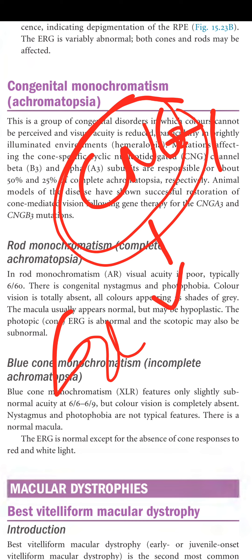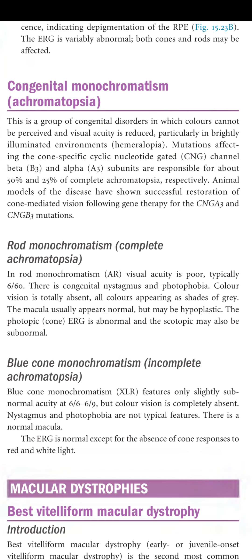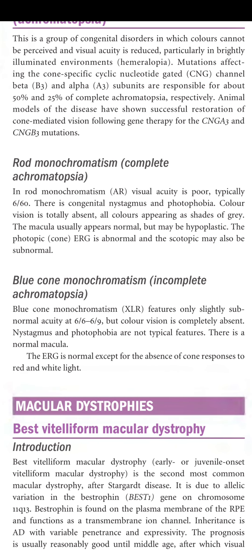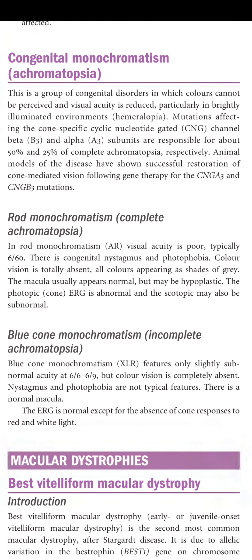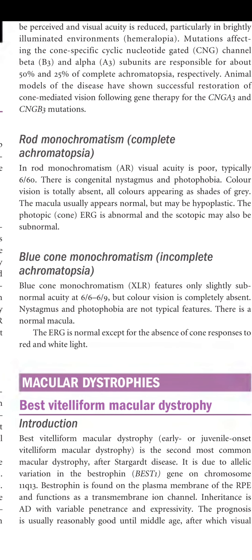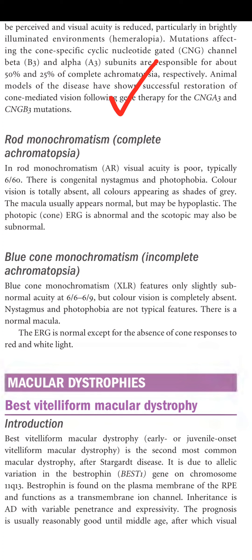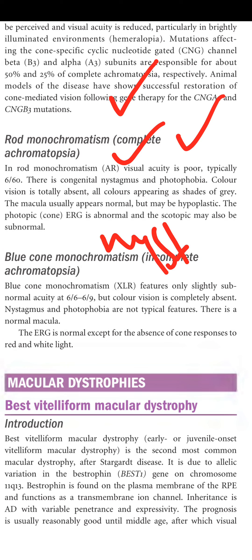Rod monochromatism is complete achromatopsia — autosomal recessive with poor visual acuity typically 6/60, nystagmus, and photophobia. Color vision is totally absent, all colors appearing as shades of gray. The macula usually appears normal but may be hypoplastic. The photopic (cone) ERG is abnormal and the scotopic ERG may also be subnormal.